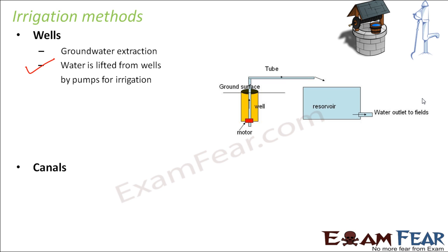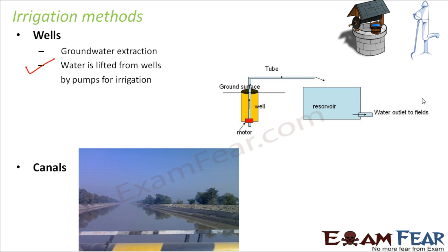The next method could be canals. As you can see, these are the canals which can act as a good source of water, and the water from these canals can be used to irrigate the nearby fields.